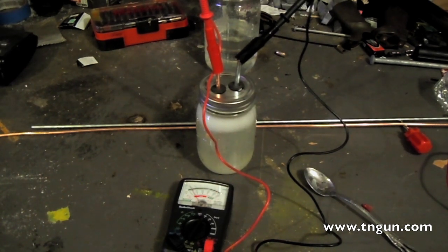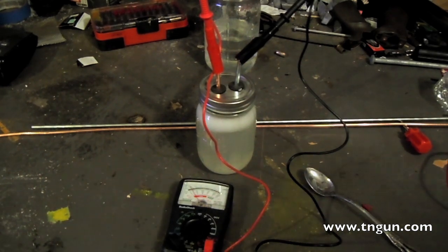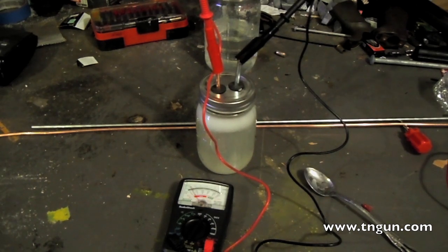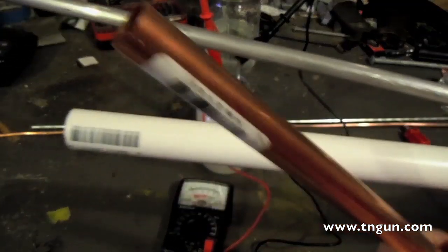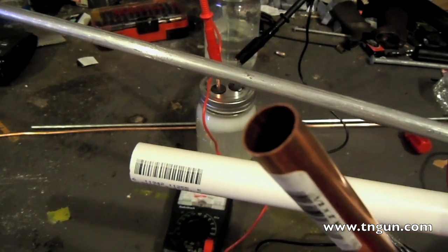And once the anode corrodes, basically all I got to do is pull it out of the solution, sand off the corrosion and put it back in. And if it corrodes too much to be used, I just stick another piece of copper in there and there we go. So it's pretty simple.